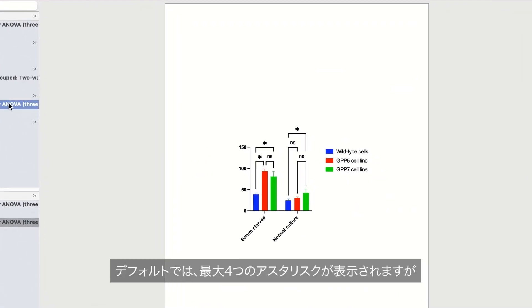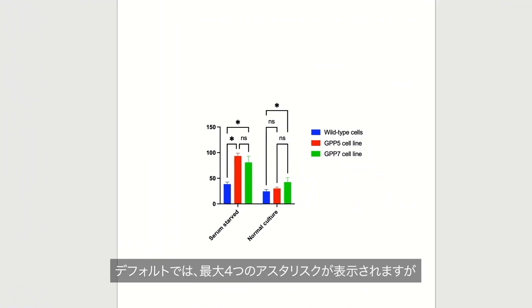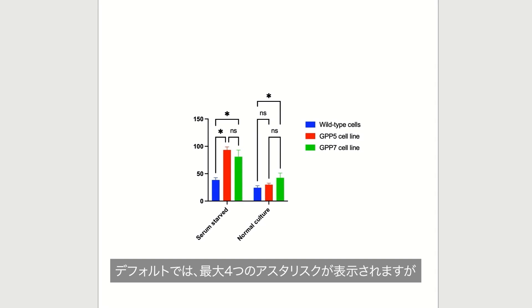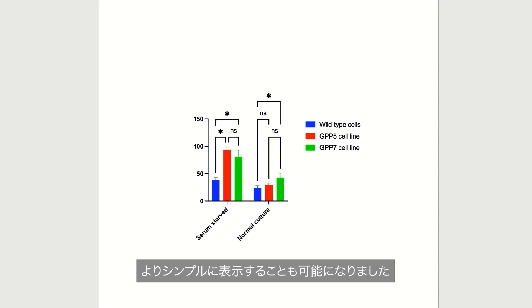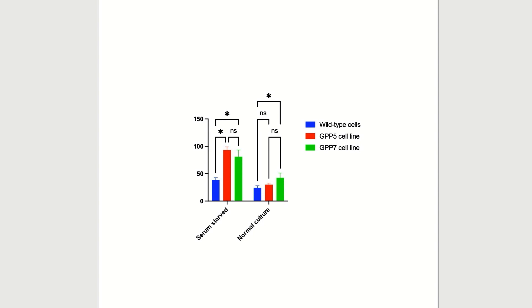Showing up to four asterisks is still the default for most analyses in PRISM 10, but this new approach offers an alternative, simpler way to report statistical results and display asterisks on graphs.